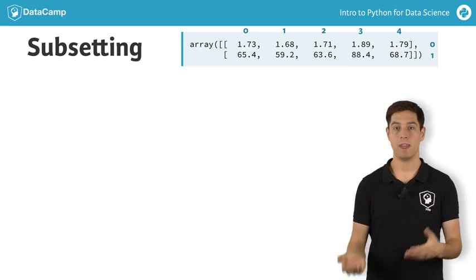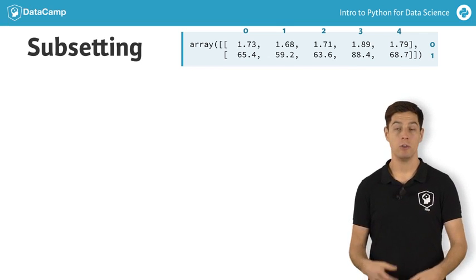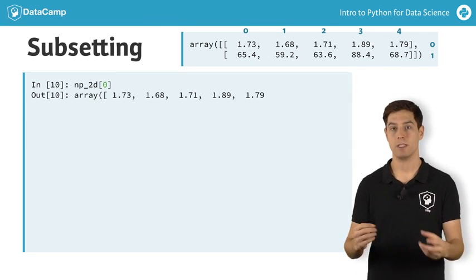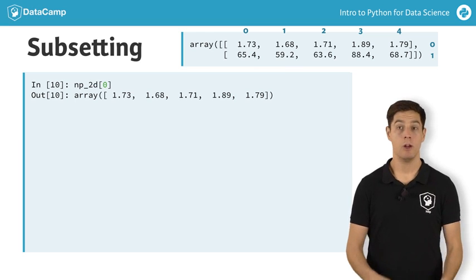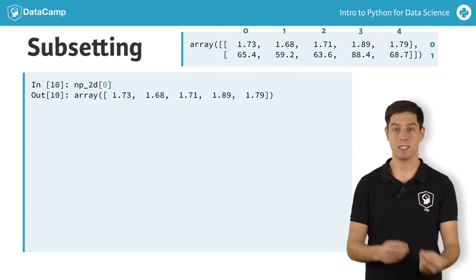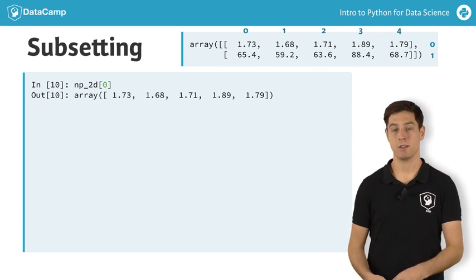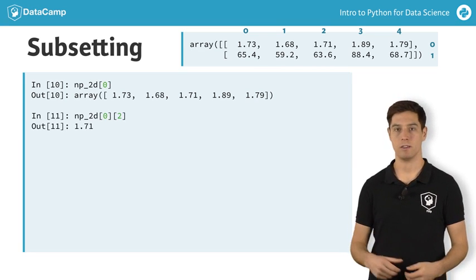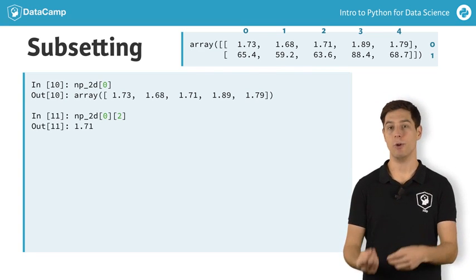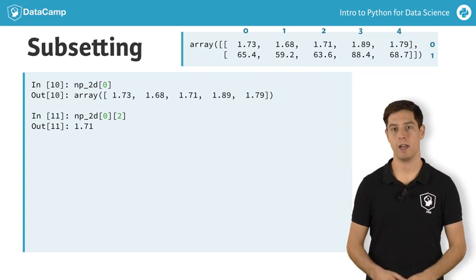Suppose you want the first row, and then the third element in that row. To select the row, you need to index 0 inside square brackets. To then select the third element, you can extend the same call with another pair of brackets, this time with index 2, like this. Basically, you are selecting the row, and then from that row, do another selection.